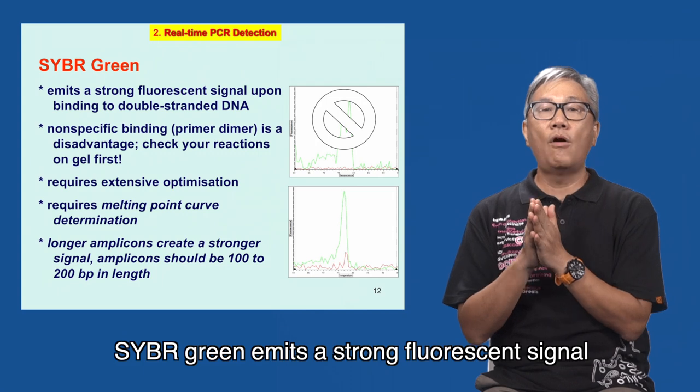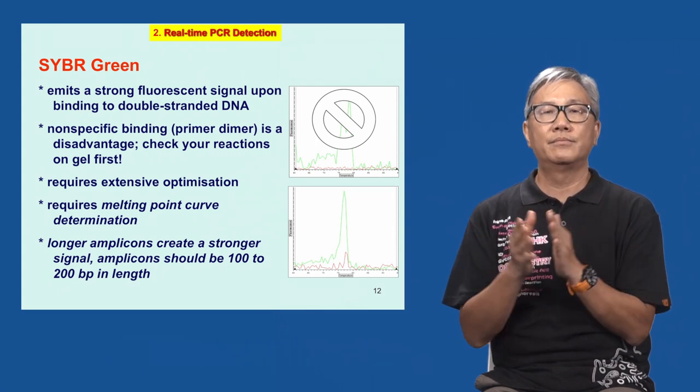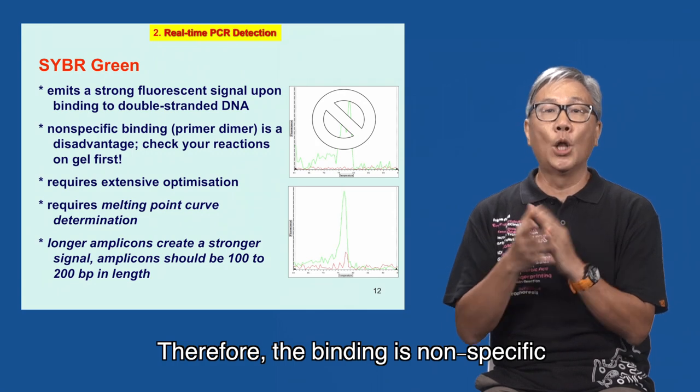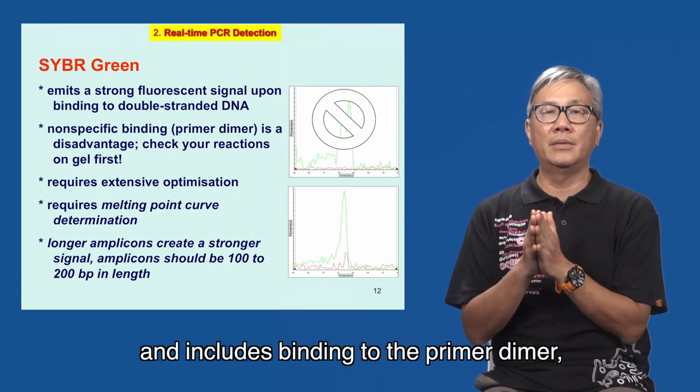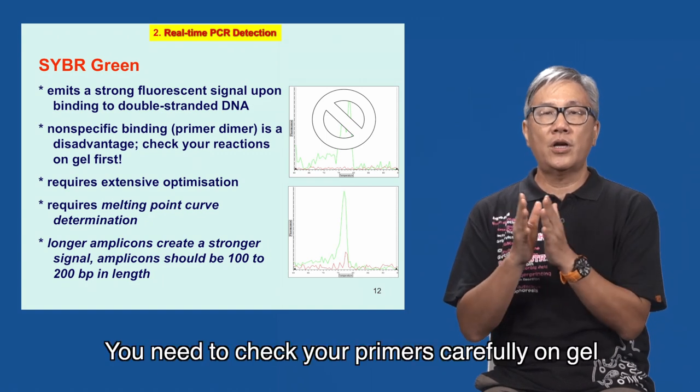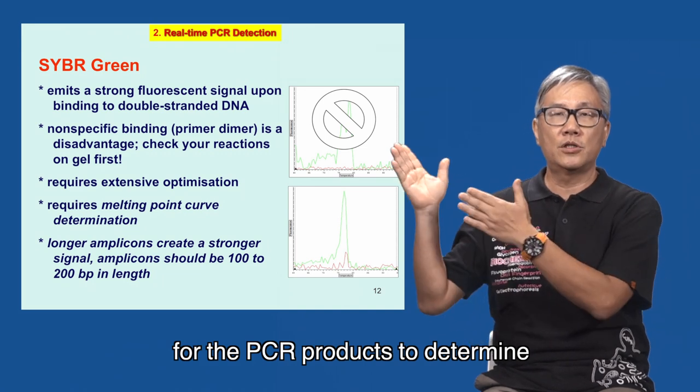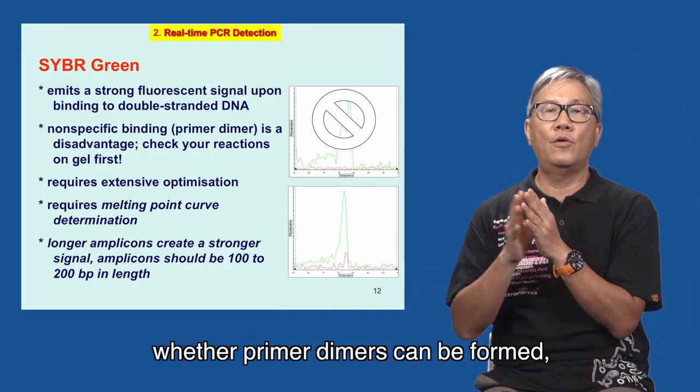SYBR Green emits a strong fluorescent signal upon binding to double-stranded DNA. Therefore, the binding is non-specific and includes binding to the primer dimer, which is the major disadvantage of this method. You need to check your primers carefully on gel for the PCR products to determine whether primer dimers can be formed.